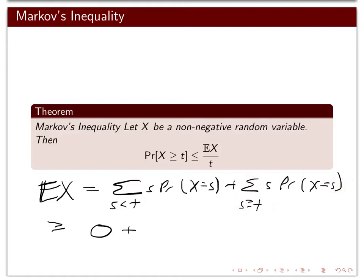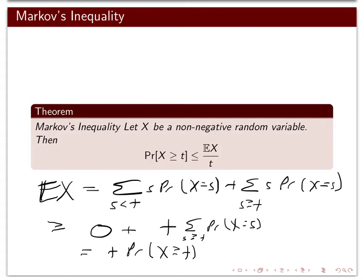For the second sum, each of these s's is at least t, so we can pull out a t. This is at least t times the sum over s ≥ t of the probability x equals s, which is exactly t times the probability that x is at least t. Now just divide both sides by t and we get Markov's inequality.